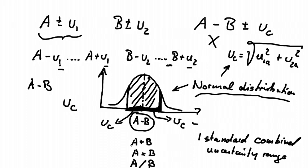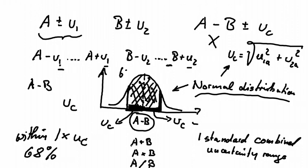Now, if it is indeed a normal distribution, we know that within one standard deviation, within one times uc, that is a characteristic of a normal distribution, we cover about 68% of all possibilities. So this shaded bit here contains 68% of the data.